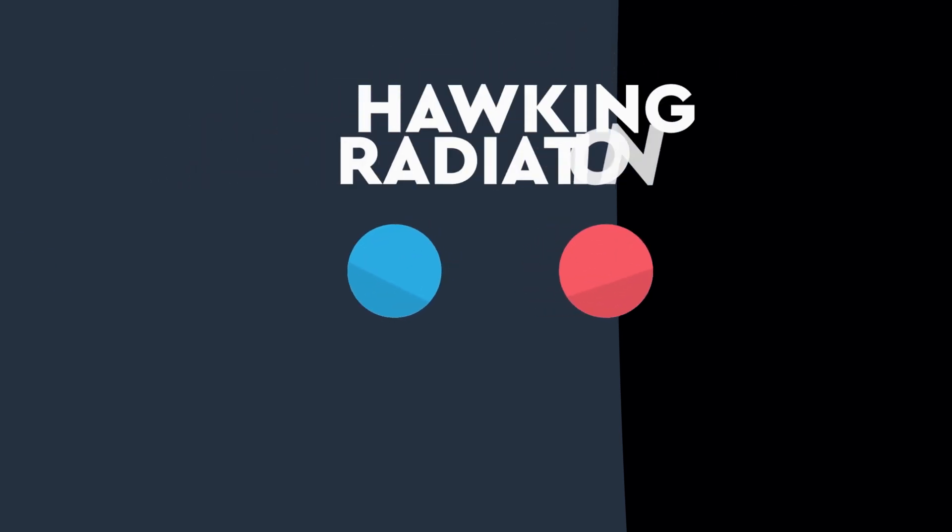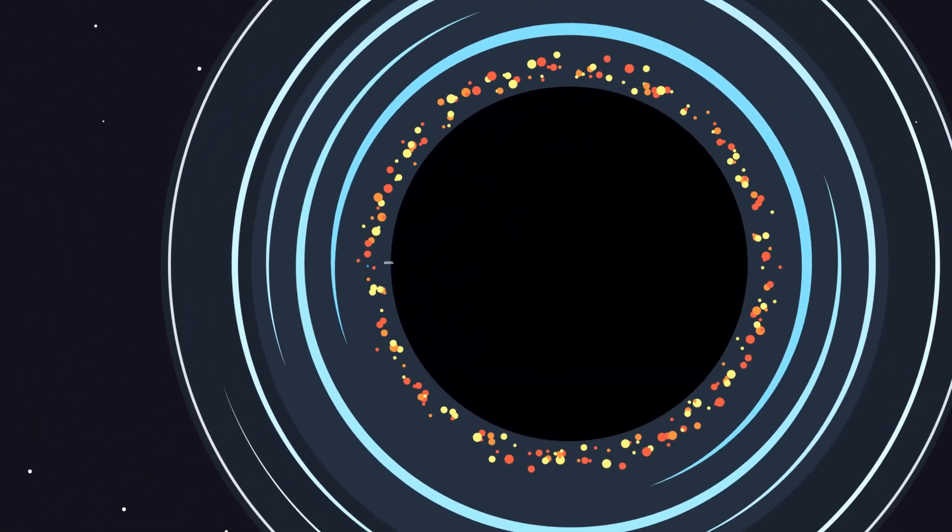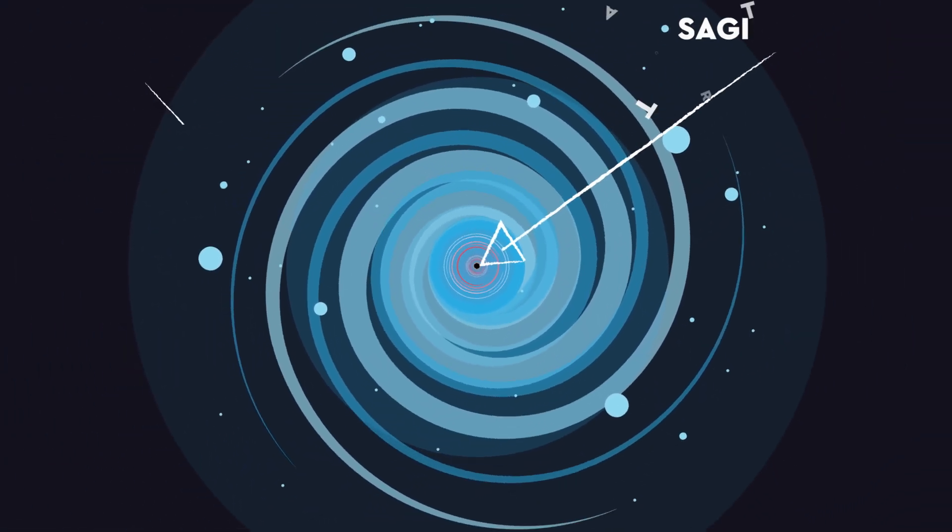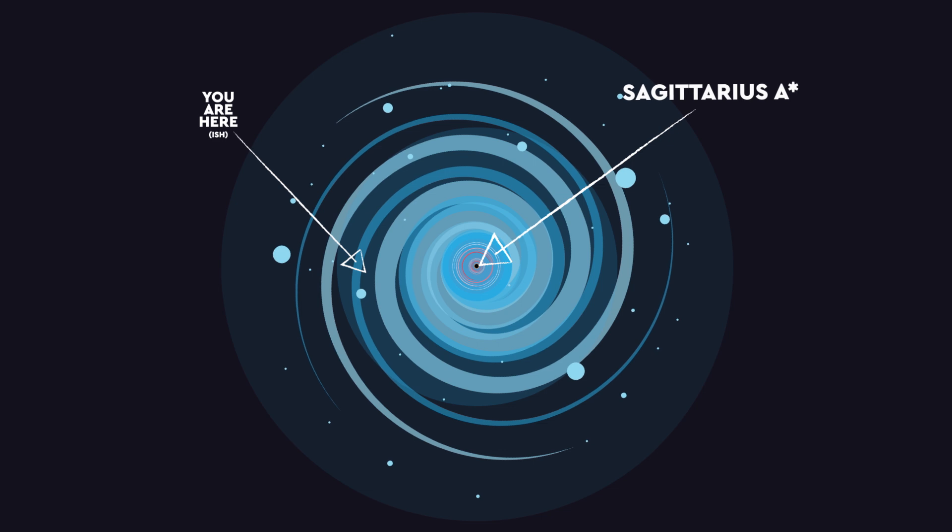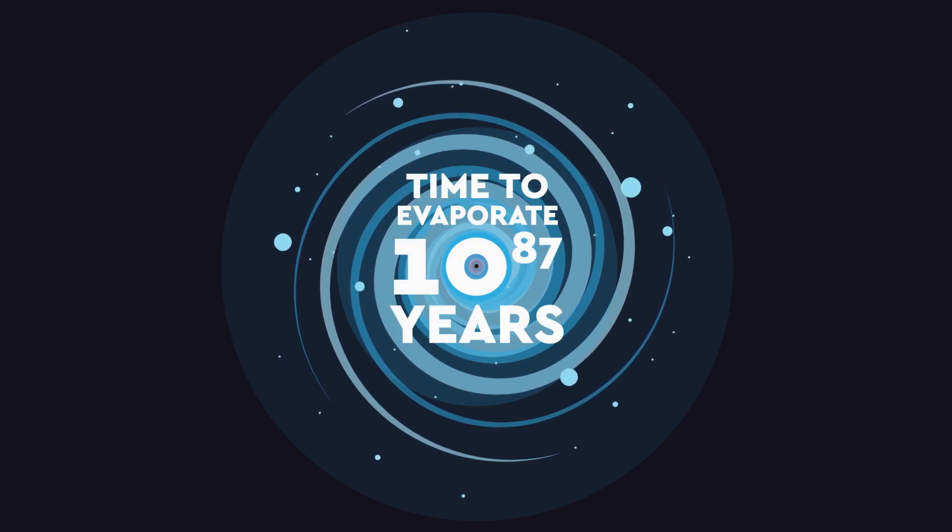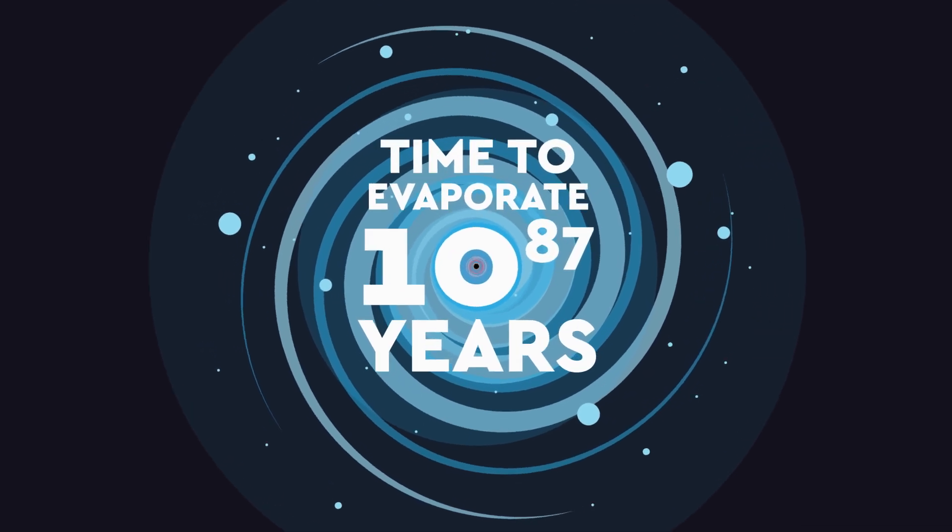However, sometimes outside of the hole, one half of these particle pairs can pop into existence and then fall into the event horizon, while the other half escapes off into the universe. This process is called Hawking radiation and slowly causes the black hole to evaporate since it's losing energy. But I'm talking seriously slowly. For Sagittarius A-star, our neighboring supermassive black hole, it would take 10 to the power 87 years before it evaporated away. That's one octovigintillion years! And no, that's not a made-up number.